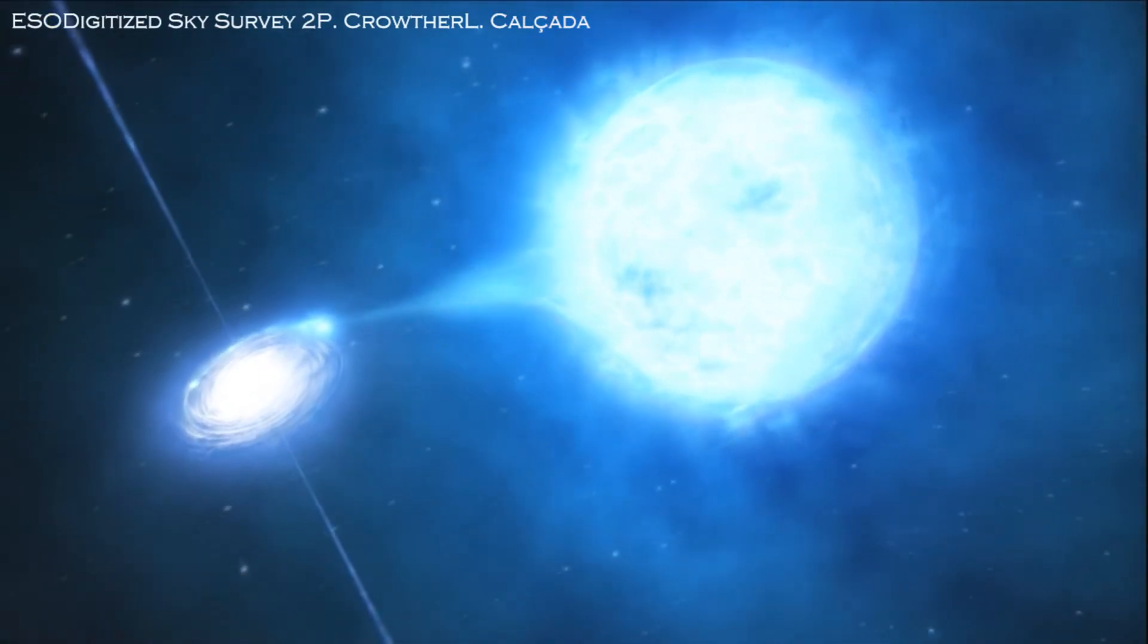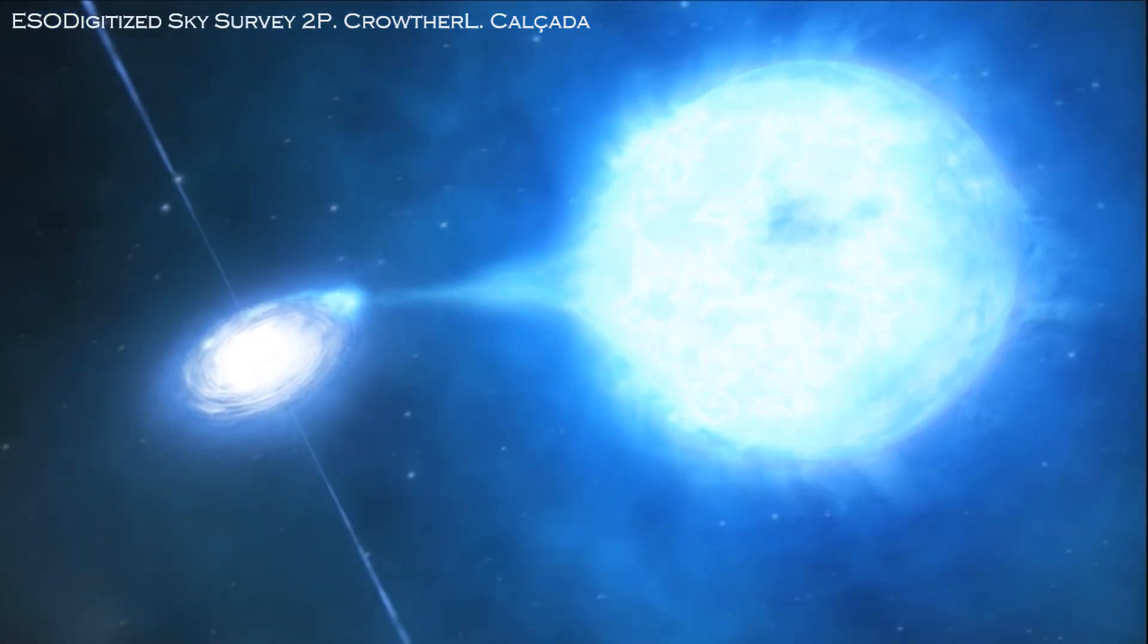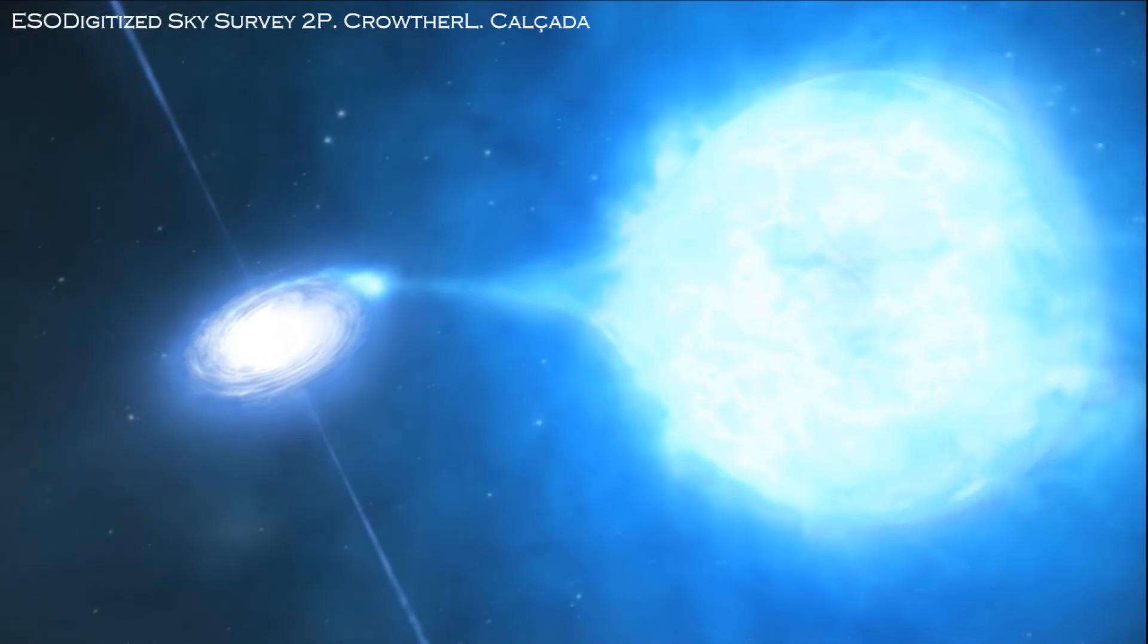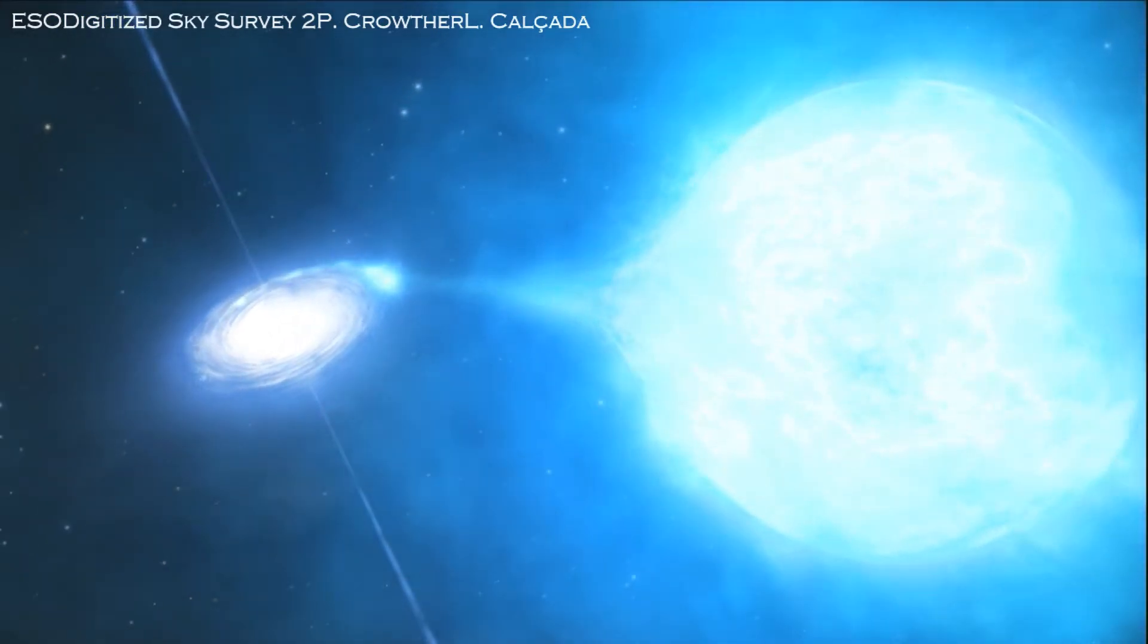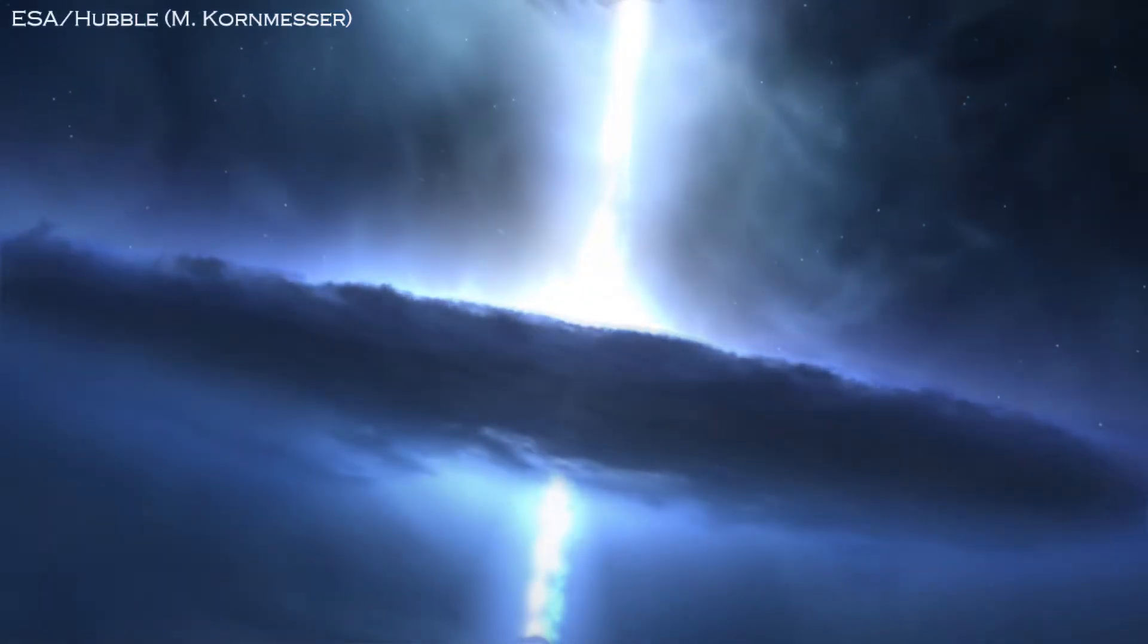So it's impossible that TON 618 will actually come near our solar system, but let us postulate that the black hole comes really close. What will happen?